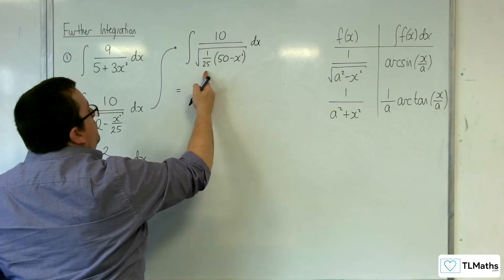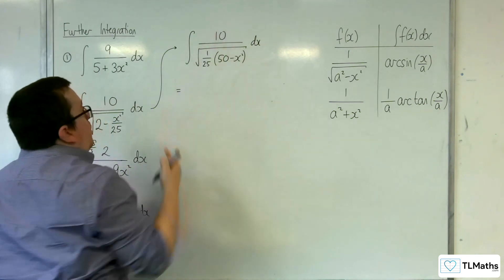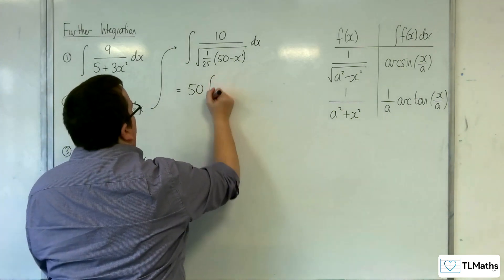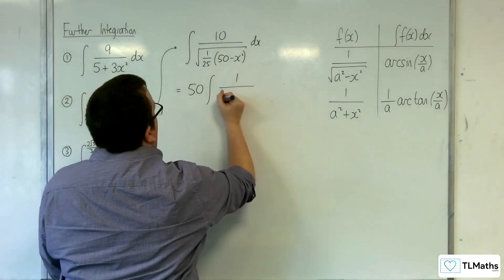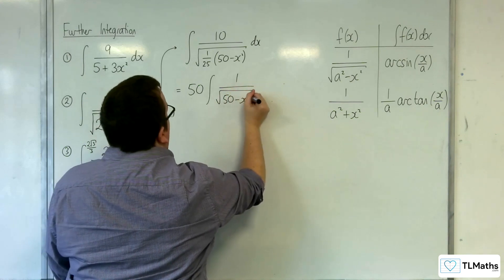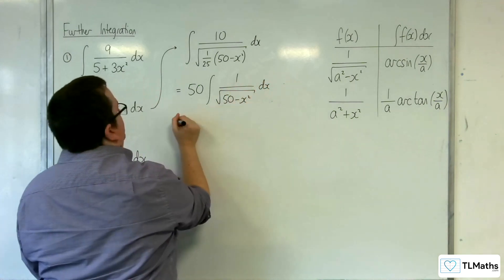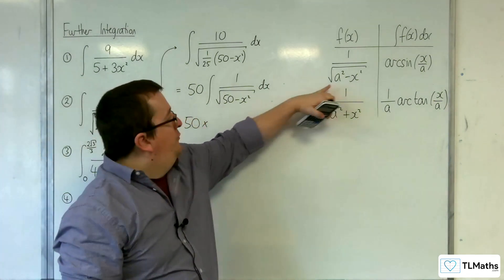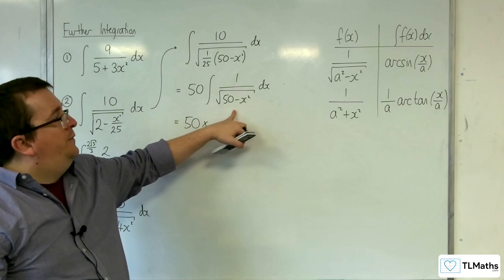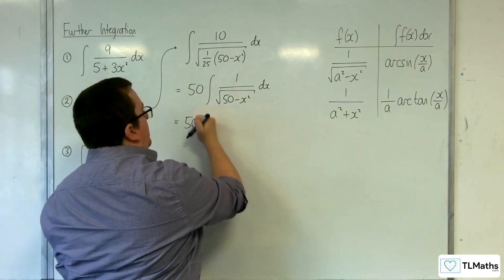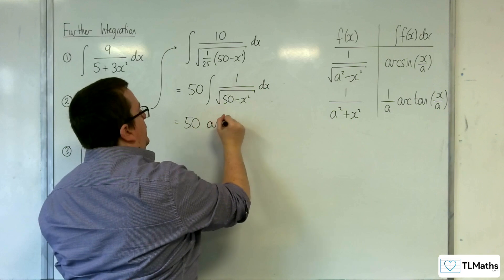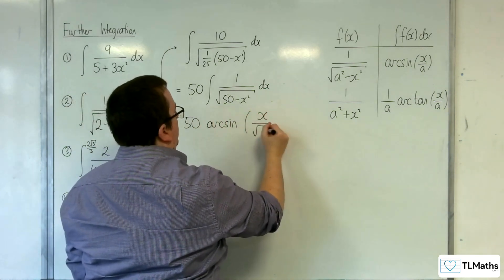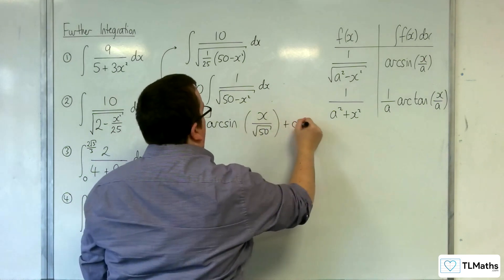The square root of 1 over 25 is 1 fifth. 10 divided by 1 fifth is 50. Pull the 50 outside of the integral sign — I'm doing a few steps in one there. 1 over the square root of 50 take away x squared dx. This is now in the correct form where a is the square root of 50. So we'll have 50 times arc sine of x over root 50 plus your constant c.